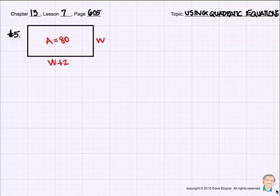Good morning. Chapter 13, Lesson 7 is on page 605 and 606, and it is the last lesson in the book. Congratulations, we've gotten to the end of the book. It says Using Quadratic Equations, and let's see what we can work out.